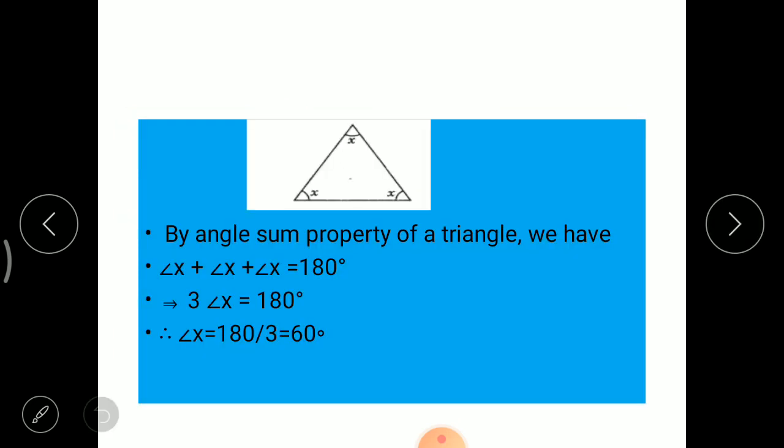Another example, here all three angles are x given to us. First, we have to find the value of x here. Again, the sum of all interior angles of the triangle is 180 degrees. So here x plus x plus x equals to 180 degrees.